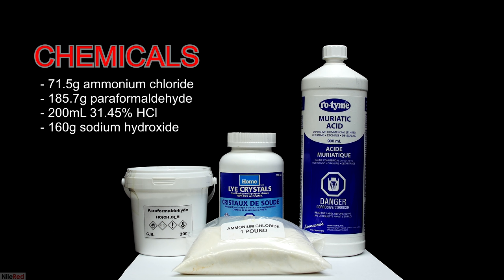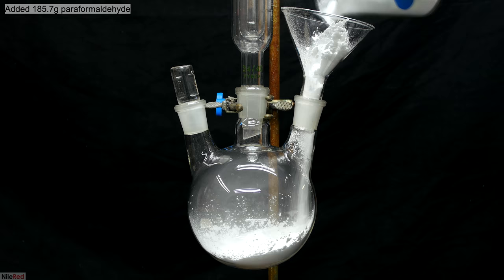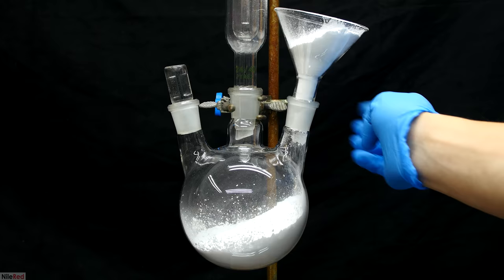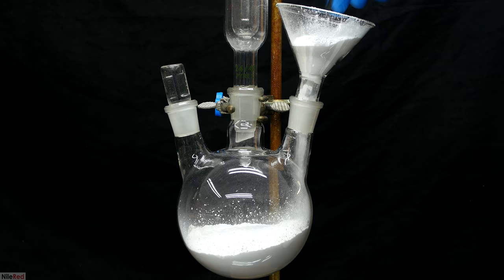I start to prep out by first adding the paraformaldehyde. I'm adding it to a three-necked round bottom flask where in the middle you can see I've already set up a reflux column. Some of the powder got stuck in the funnel and I tried to liberate it by tapping it but it didn't work too well. To loosen up the powder it was much easier to just use something like a glass stir rod.